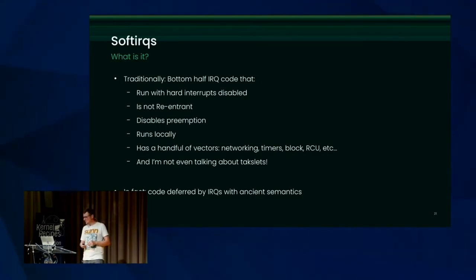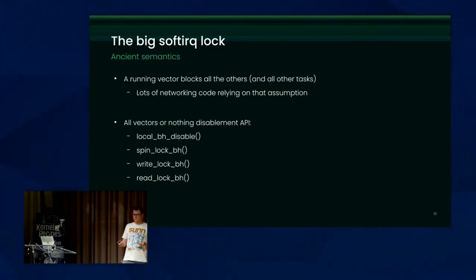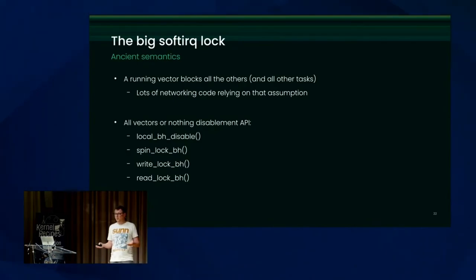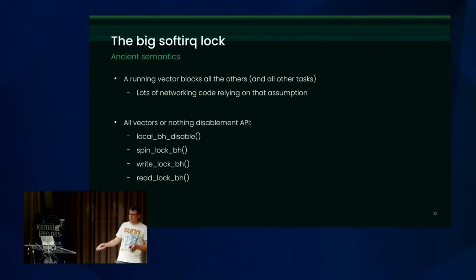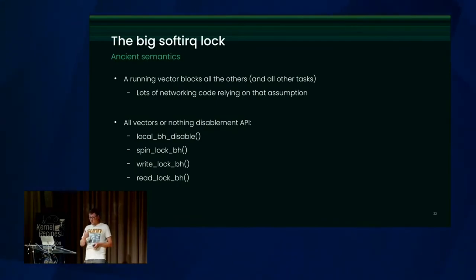This is actually a very old mechanism in the kernel with very ancient semantics. The problem with soft IRQs is that a vector running blocks everything else. For example, a networking vector blocks the timer vector — so if you have a lot of packets to process by the networking code, during that time timers are not going to execute, and neither are RCU callbacks or block. Vectors are not interruptible by other vectors and they are not preemptible.